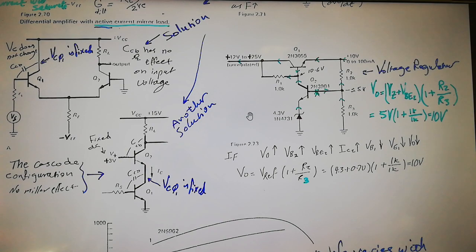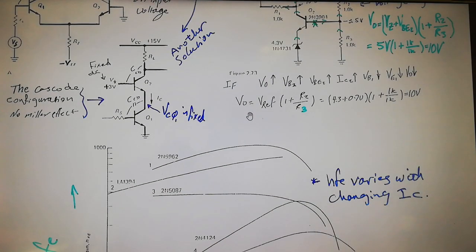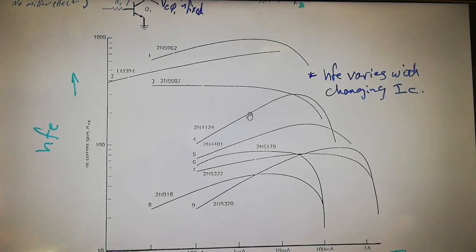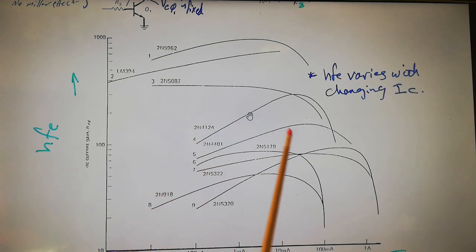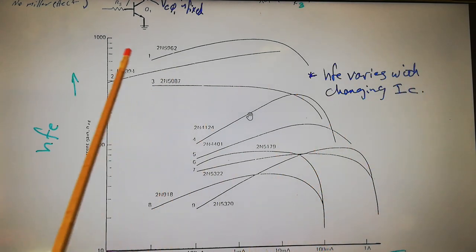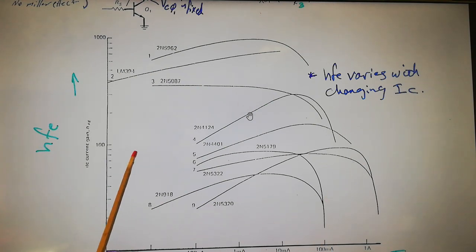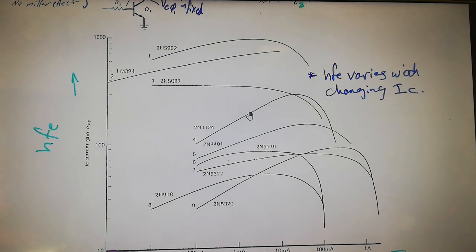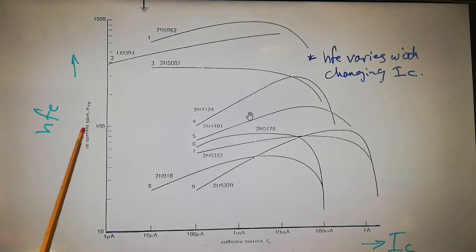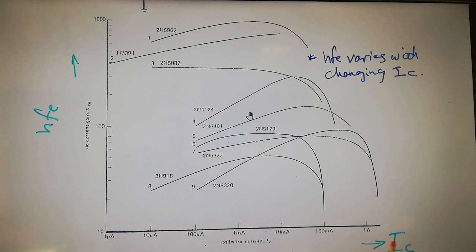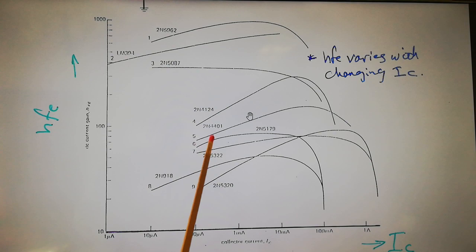Now here is the hfe curve for various transistors, showing how hfe varies with changing Ic. Look at how these transistors behave. Both axes are on logarithmic scales — hfe on one axis and collector current Ic on the other. They almost all behave the same way.